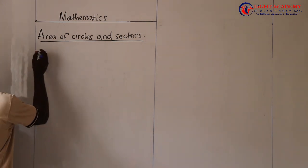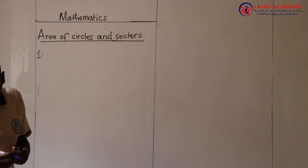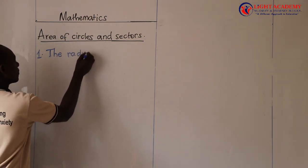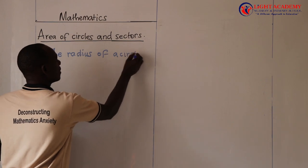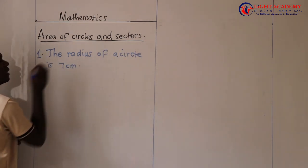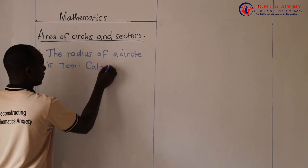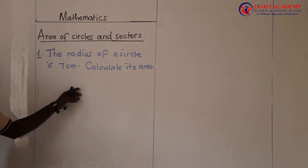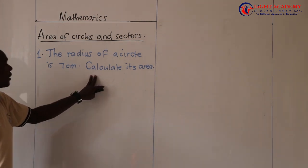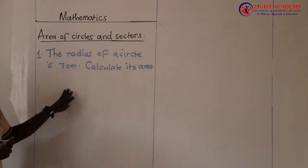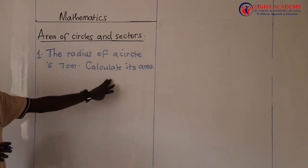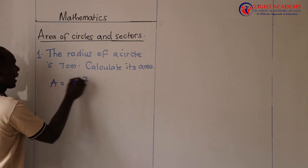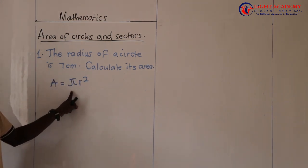Question number one: the area of a circle. The radius of a circle is seven centimeters, and the question is to calculate its area. This is not something which is completely new to the candidates — they did this in Primary 6. So what is the formula of area? Because that's what they are asking us to work out. The area of a circle is given as pi r squared. That is the formula for working out the area of all circles.